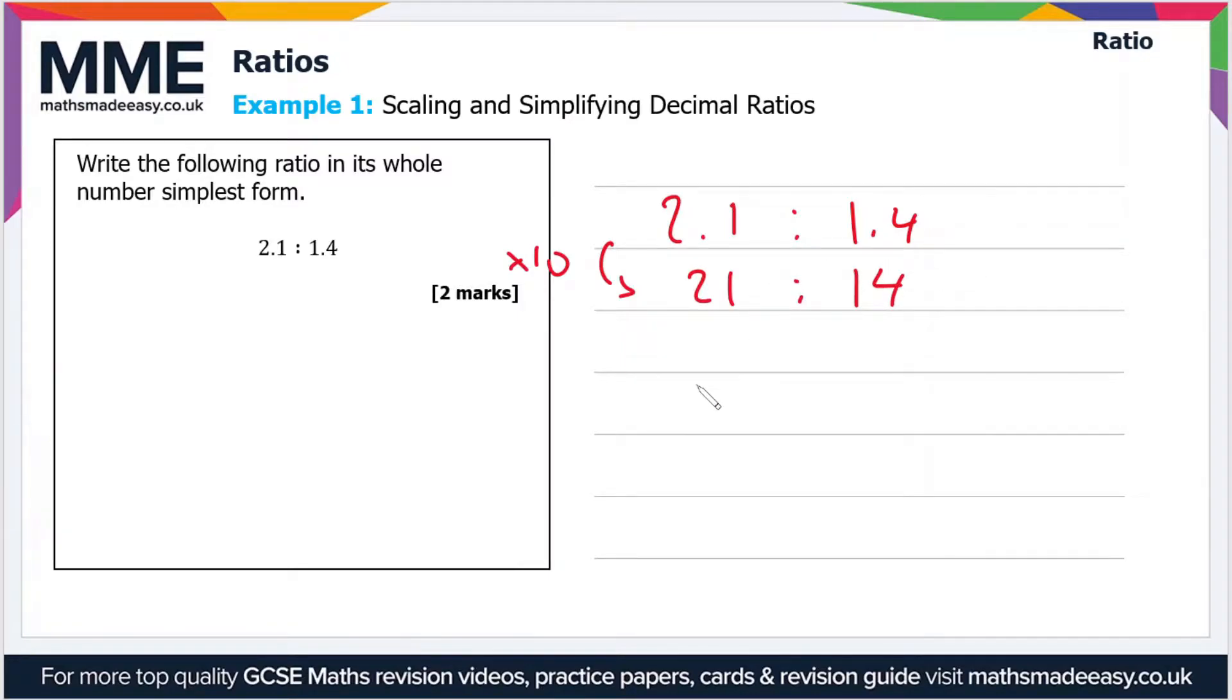And now we can identify that there's a common factor of 7 in both 21 and 14. That's the highest common factor of both. And so if we divide by 7 that gives us 3 to 2.